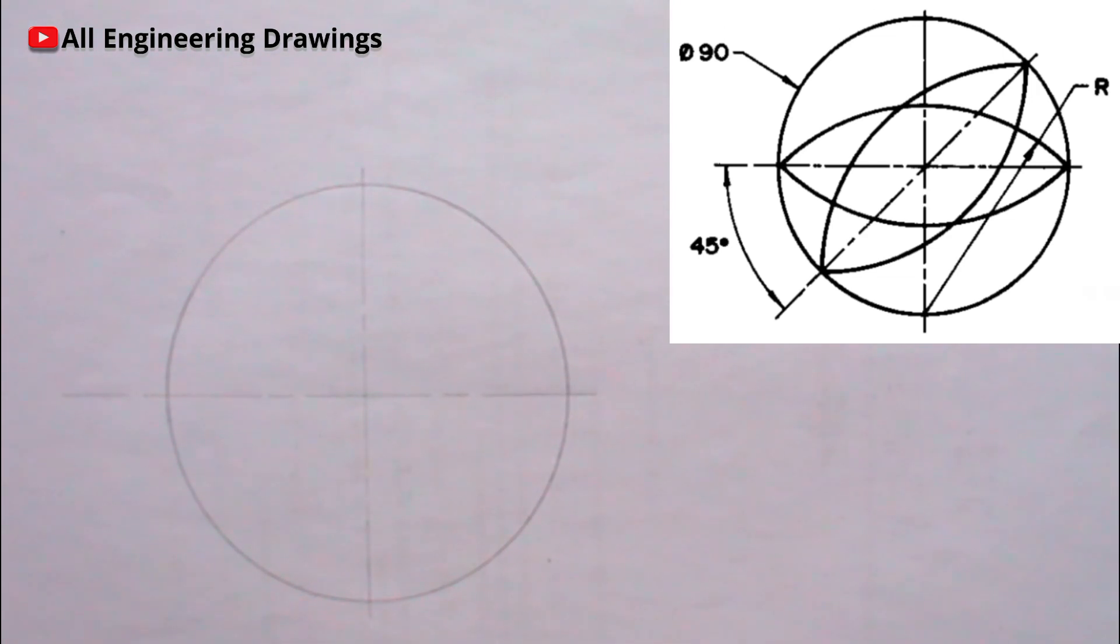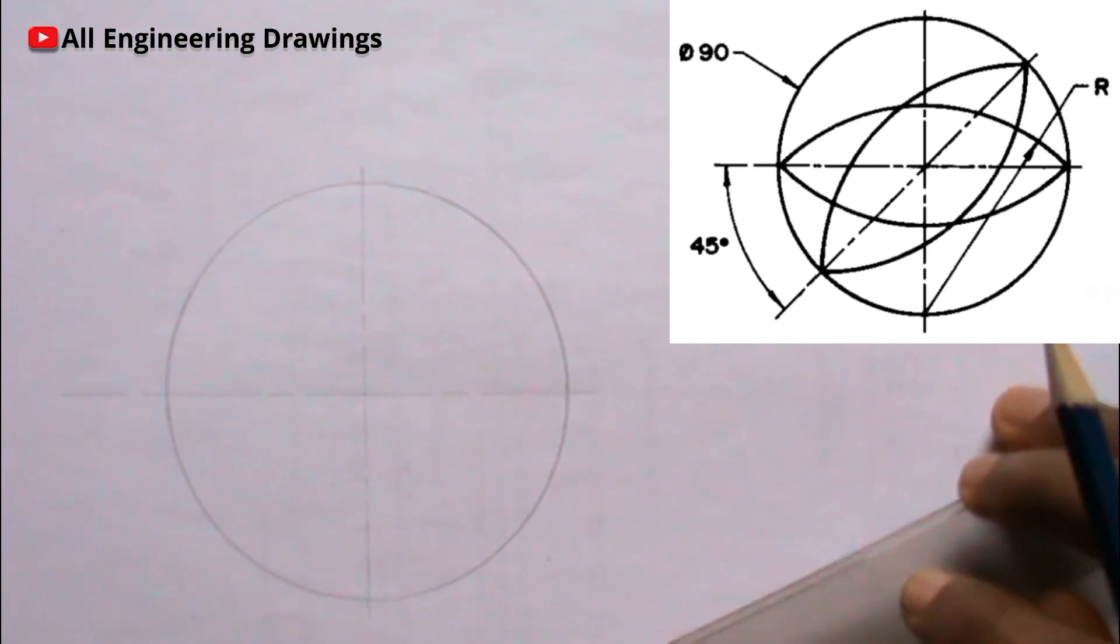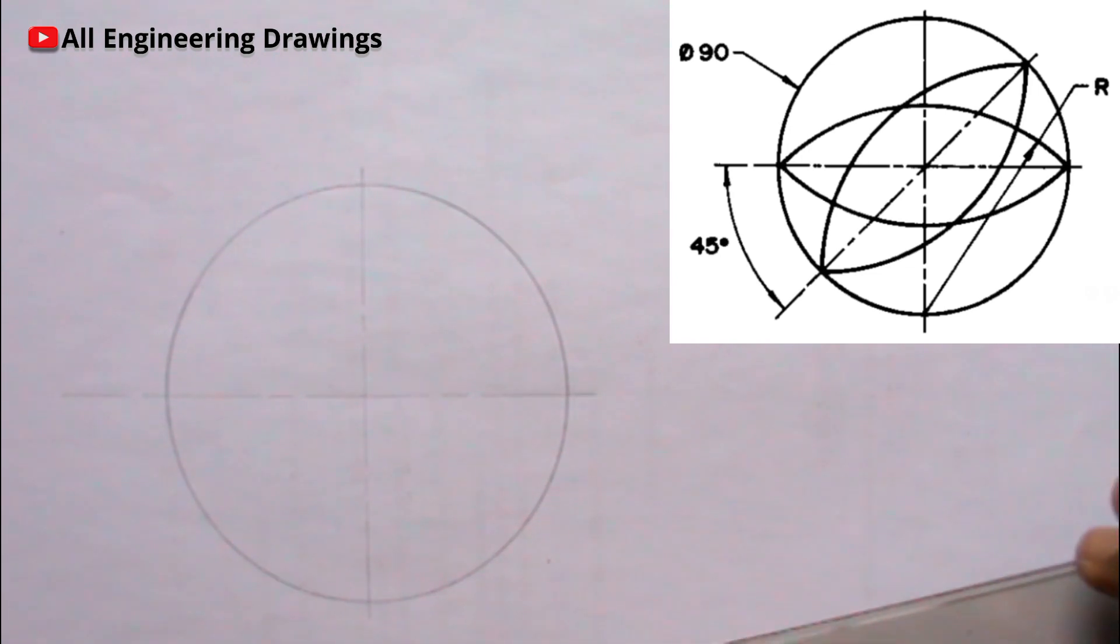There is a line 45 degrees to the horizontal that passes through the center of the circle. So you can easily draw that line using your 45-degree set square. The line is 45 degrees to the horizontal.